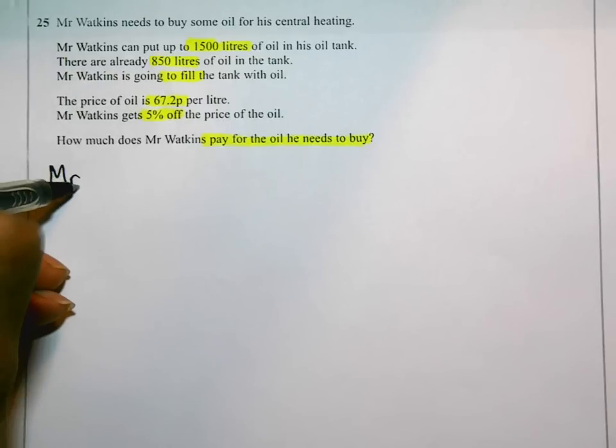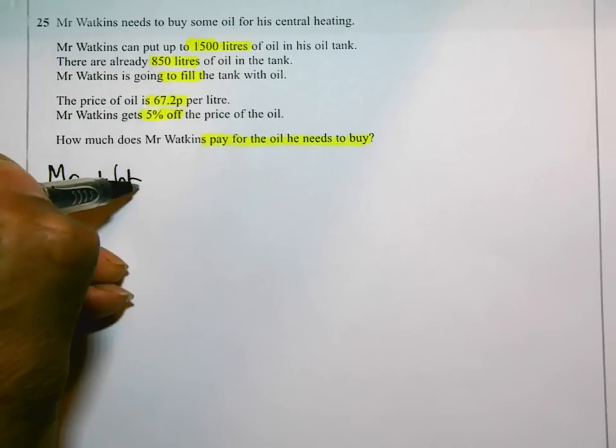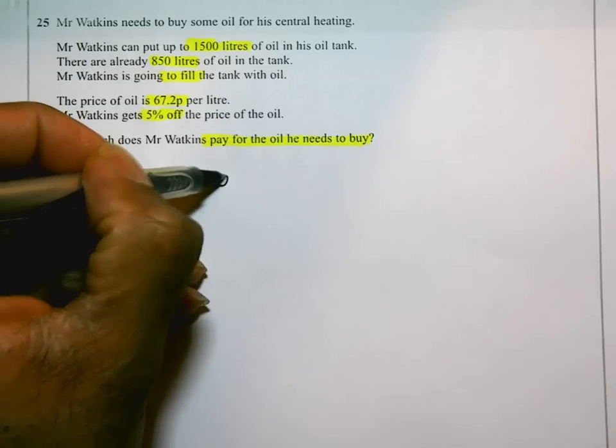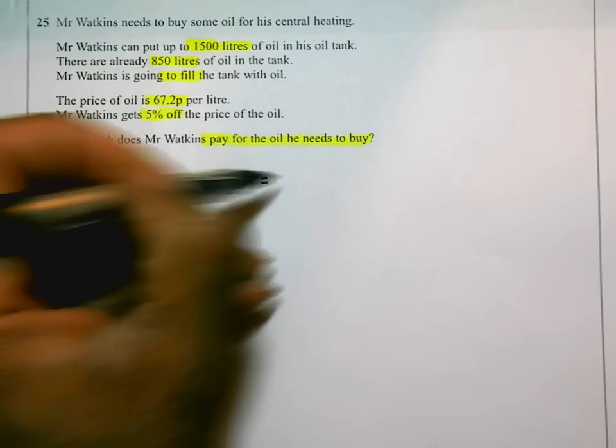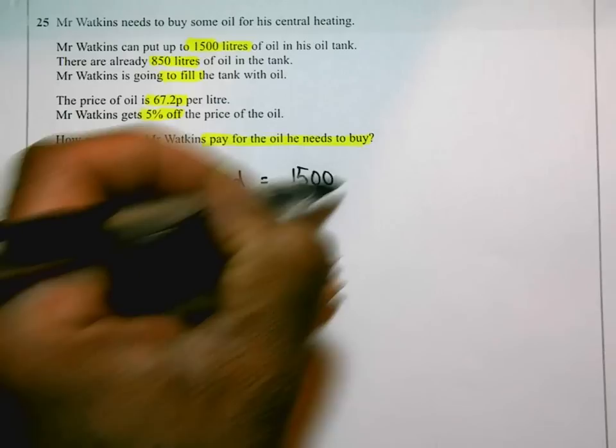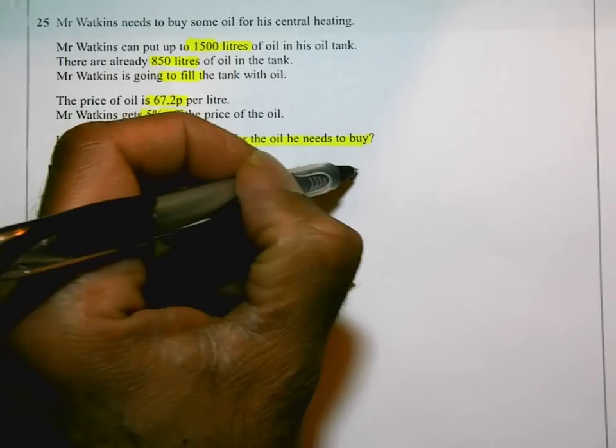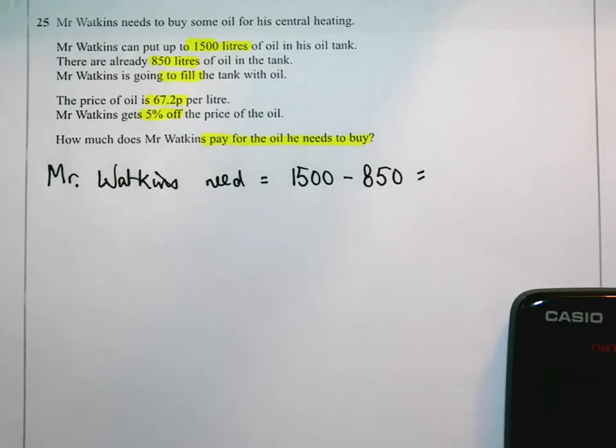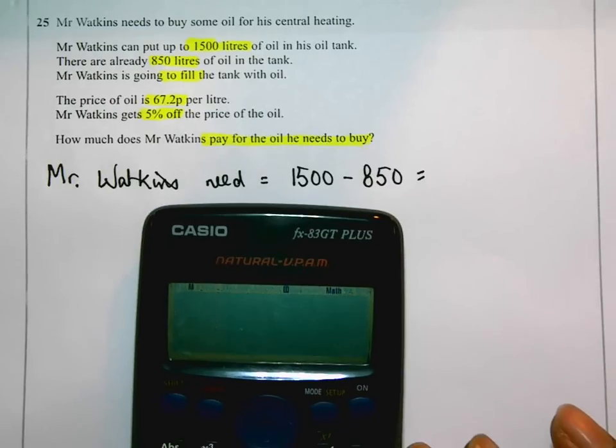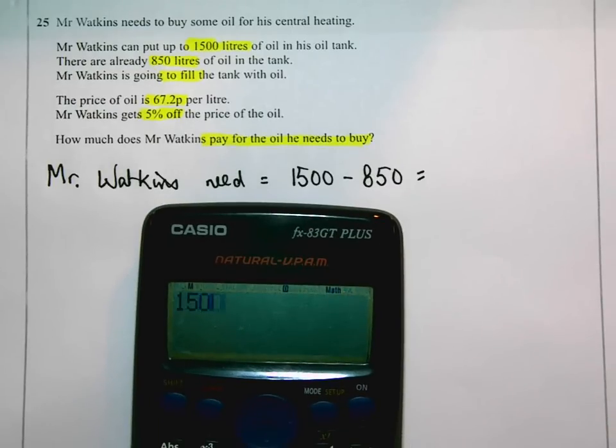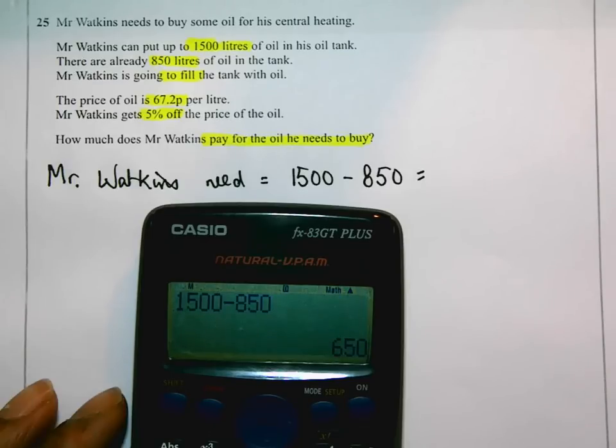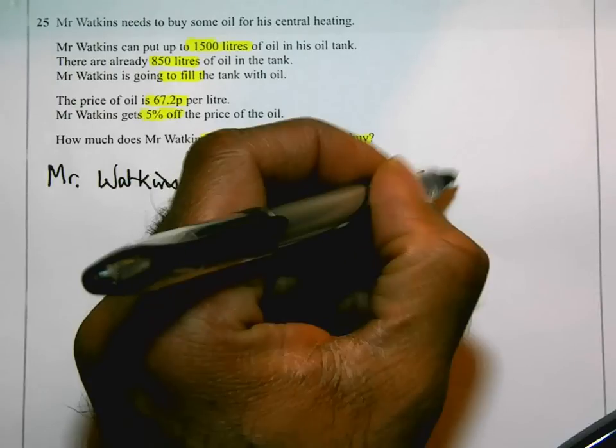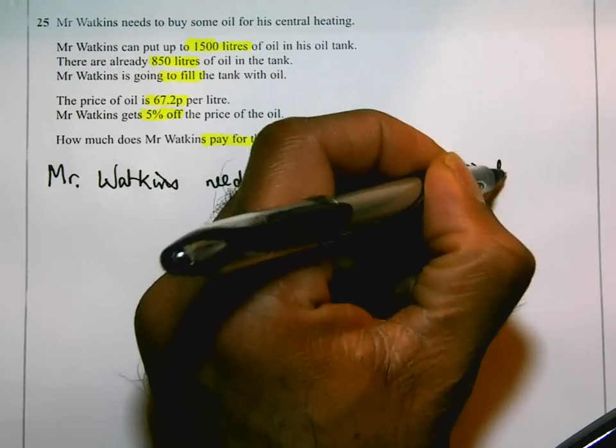Mr Watkins needs 1,500 take away 850 litres. I'm actually going to use the calculator to help me work through this. So, 1,500 take away 850 litres. That's 650 litres.